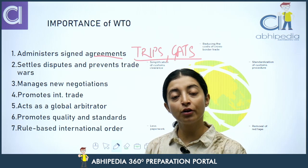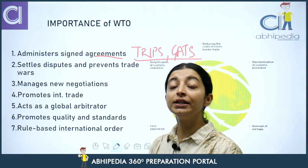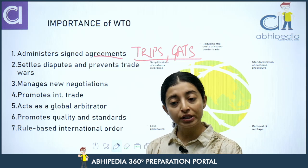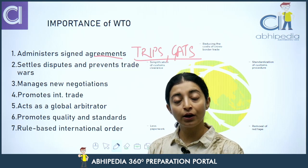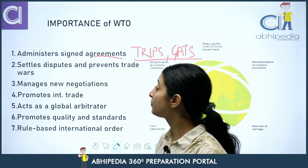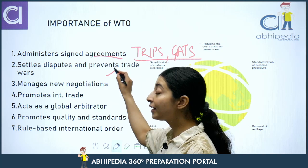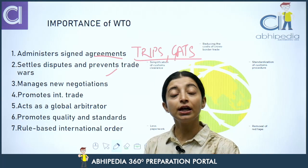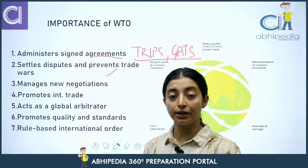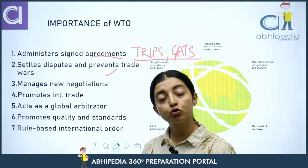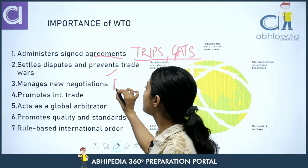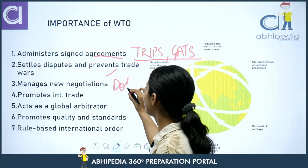What else does the World Trade Organization do? It settles trade-related disputes and prevents trade wars. Also, it manages new negotiations around trade — for example, the Doha Round that took place.